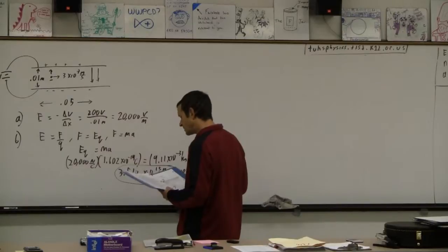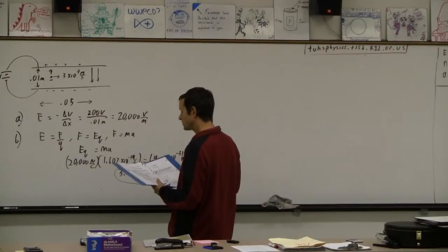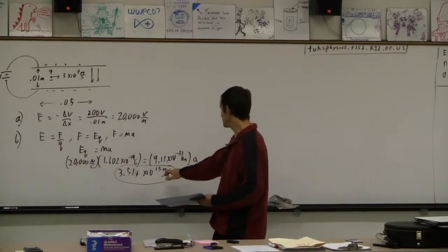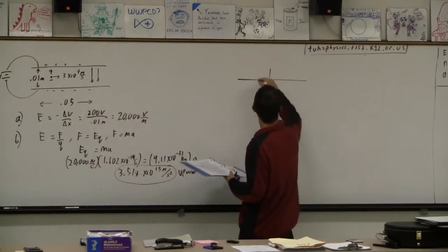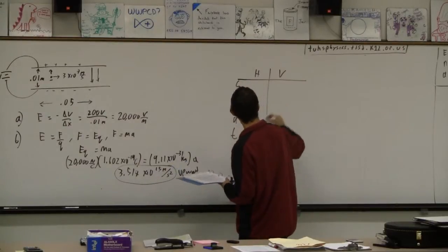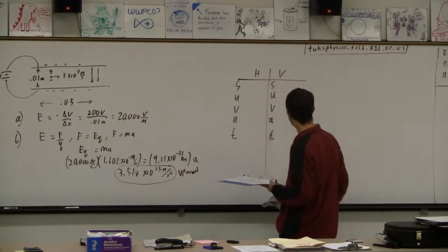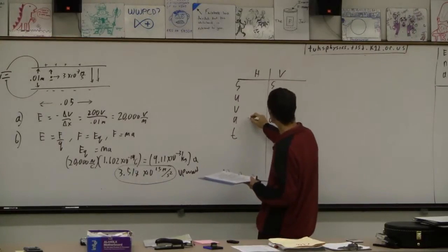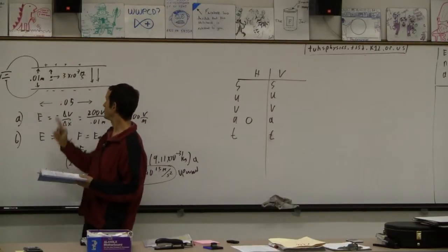All right, and then it says determine the magnitude of the vertical displacement of the electron for the time interval during which it moves through the region between the plates. So now once you have acceleration we can do this. Horizontal, vertical. And it's just like projectile motion, only it's got a wee bit more acceleration. So horizontally it's not accelerating anymore because it's just flying this way and the field is actually perpendicular to it.